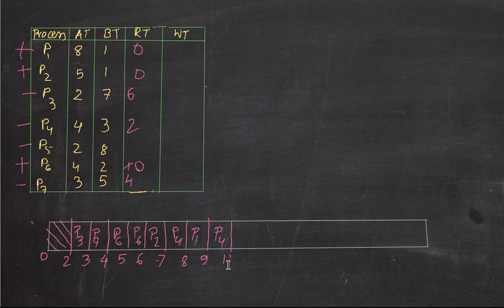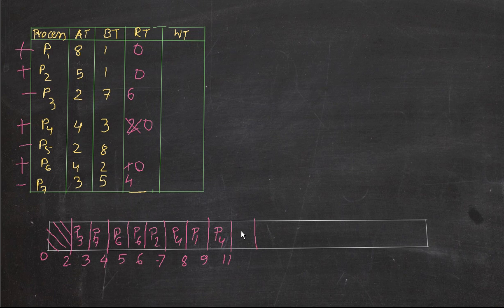P1 is done. Now the shortest job among the remaining processes — with burst times of six, two, eight, and four — is P4 again. We complete P4 fully: nine, ten, eleven. P4's remaining time is now zero. P4 is done. The remaining processes are P3, P5, and P7.